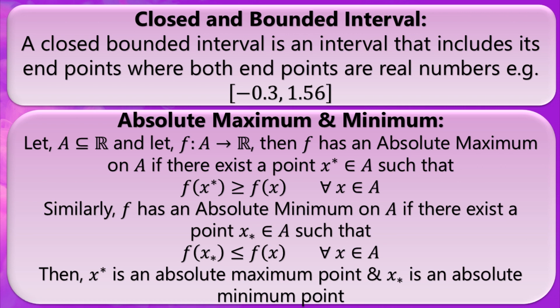Same goes for absolute minimum. A point x* that belongs to A is an absolute minimum of F if the image of x* is less than or equal to all the images of the elements of A.